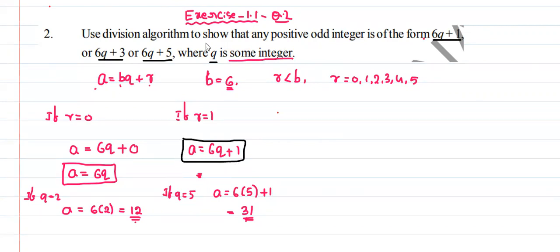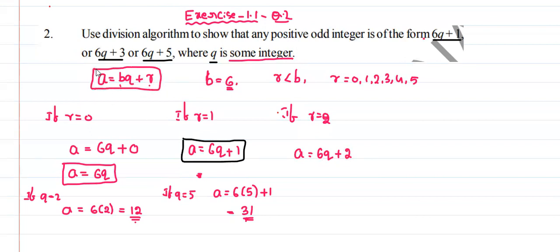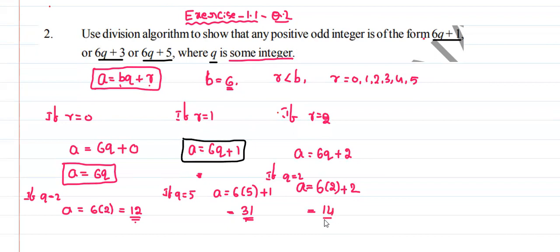If r is equal to 2, then a is equal to 6q plus 2. Taking q equals 2, a equals 6 into 2 plus 2, which is 12 plus 2 equals 14. This is an even number.